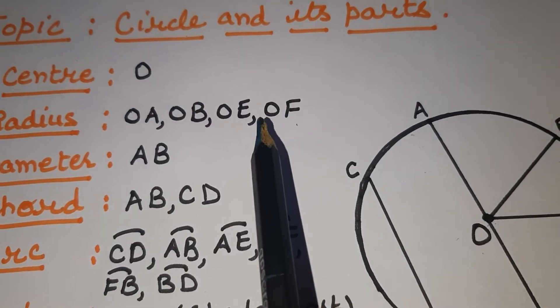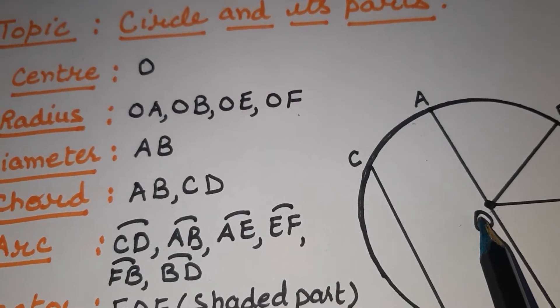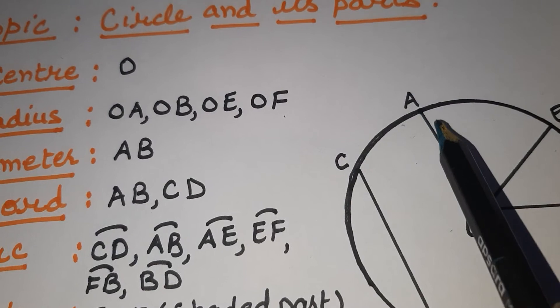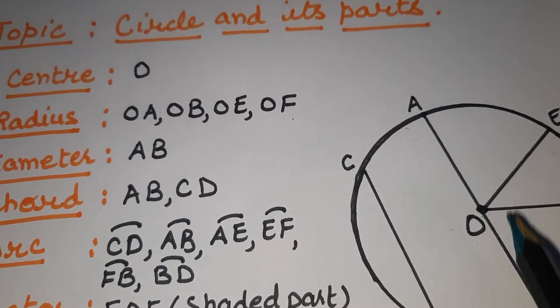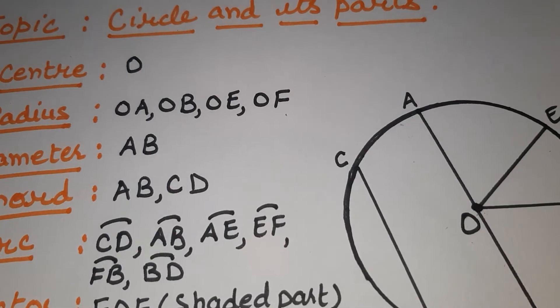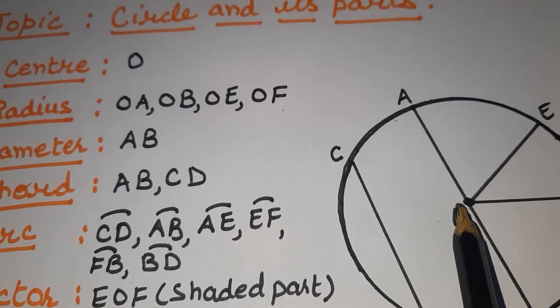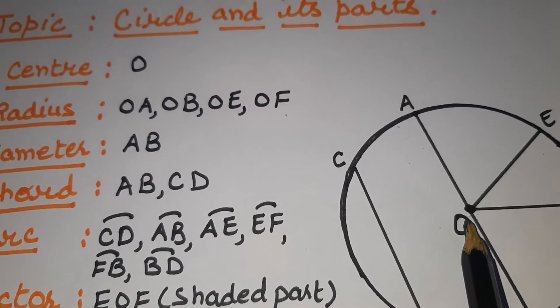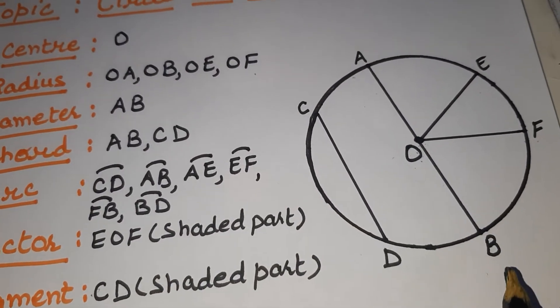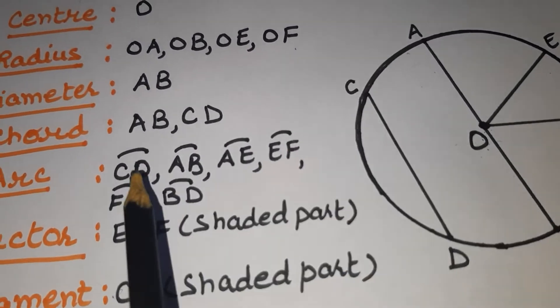Next is diameter. Diameter is the line passing through the center and touches the edges of the circle at two points, A and B, and it is passing through center O. It is mandatory to pass through center, only then it is diameter. So diameter is AB, but it is passing through O.